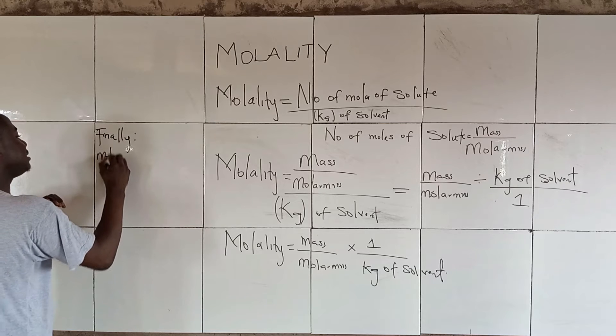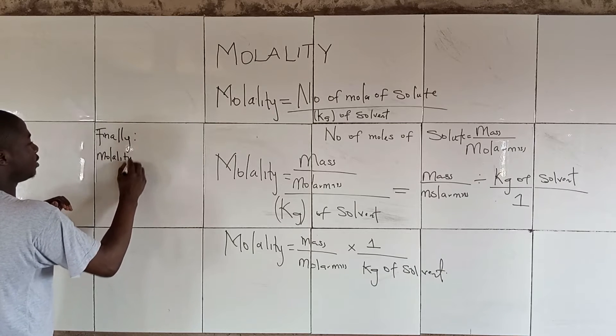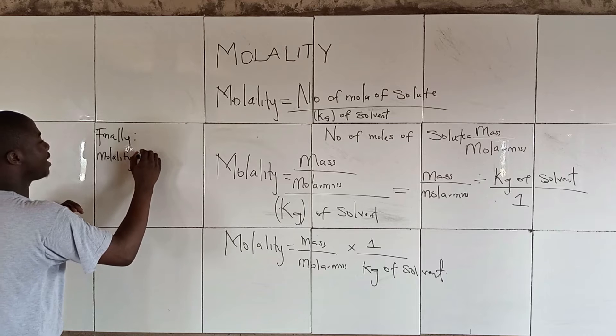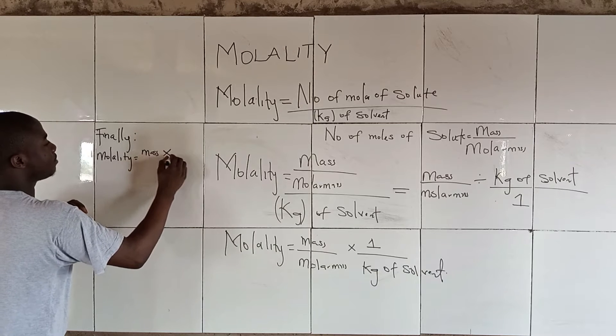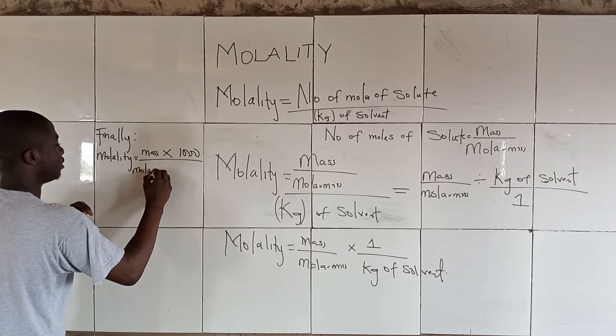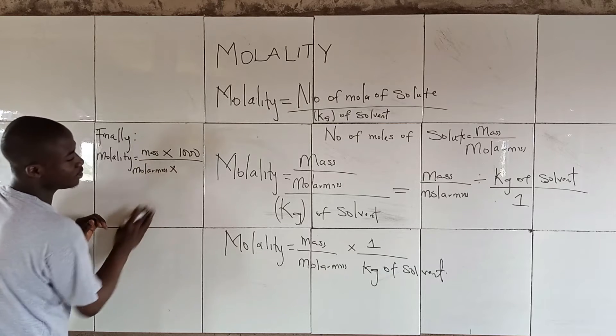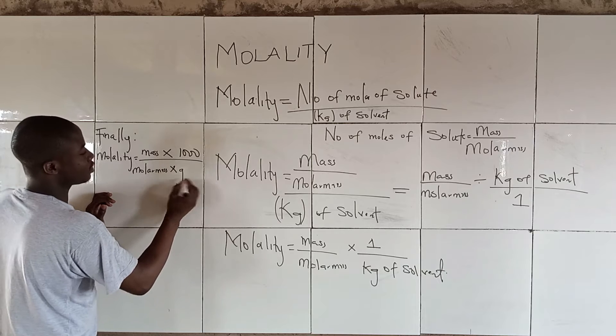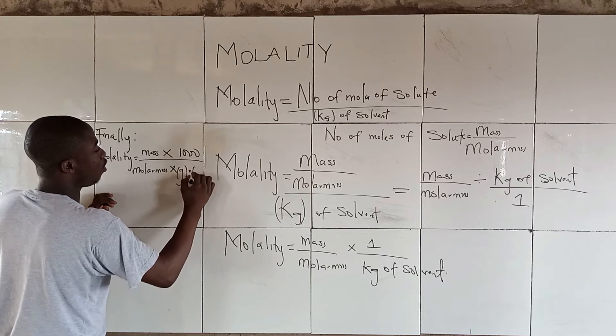Finally, molality is equal to mass times 1,000 over molar mass times grams of solvent.